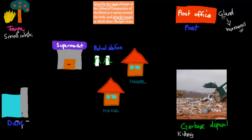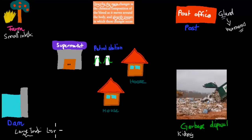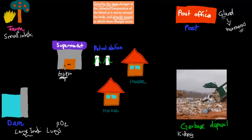We have dams, which provide water — just like our large intestine helps make sure we have that life-sustaining nutrient, water. And the lungs don't deliver water, but they deliver oxygen, which is also really important. Then we've got our supermarket, which can be compared to our liver, because here all the different nutrients come in and get repackaged. So it takes all those raw materials, changes them, and the nutrients get absorbed from blood into the liver cells.